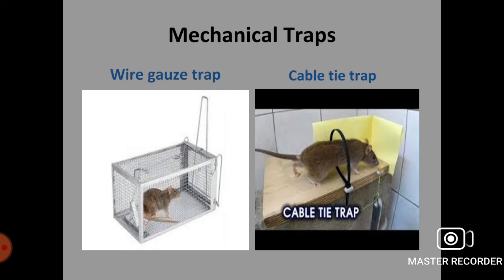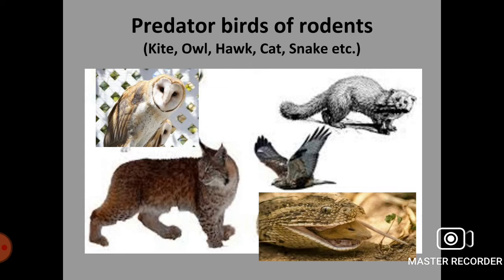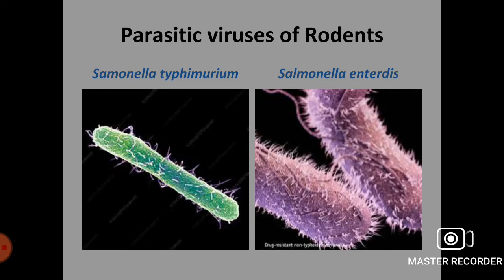Under mechanical control, we can use various types of traps like wire gauze trap, cable tie trap and bamboo trap to trap rodents. Under biological control, we can use predator birds like kite, owl, hawk, cat and snake, or parasitic viruses like Salmonella typhimurium and Salmonella enteritidis to control these rodent pests.